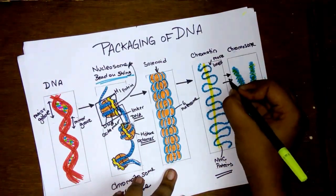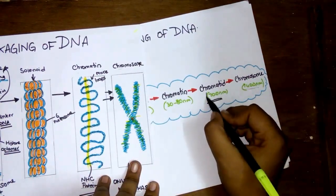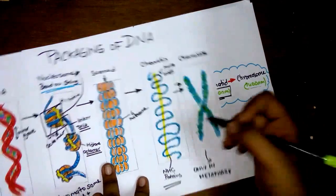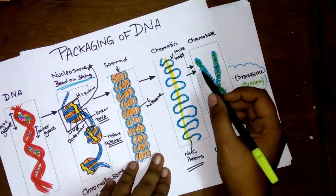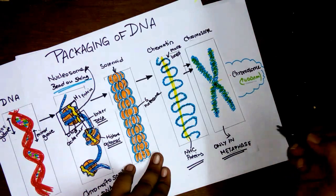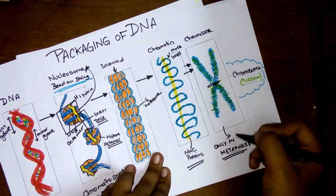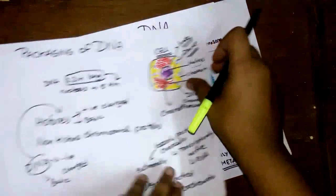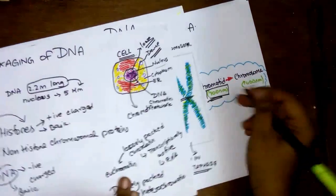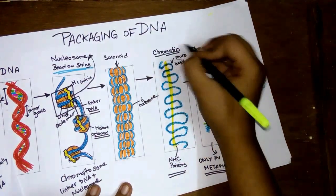This chromatin can undergo more packaging to form a chromosome, and before that it forms something called a chromatid which has a diameter around 700 nanometers. That also includes more of these non-histone chromosomal proteins. A chromosome only occurs in metaphase. When a cell is in its resting phase or when it's not reproductively active, the DNA is all in the chromatin form and not in the chromosome form. It is in chromatin form and not the chromosome.